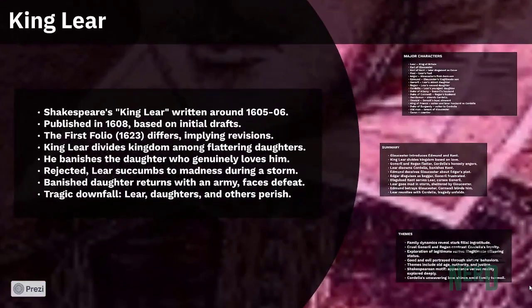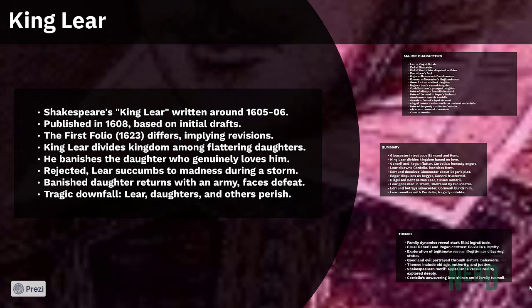King Lear, a tragic play by William Shakespeare, was penned around 1605–1606 and first published in 1608 as a quarto edition, possibly based on the playwright's initial drafts. The 1623 First Folio differs notably from the quarto, suggesting revisions for theatrical performance.